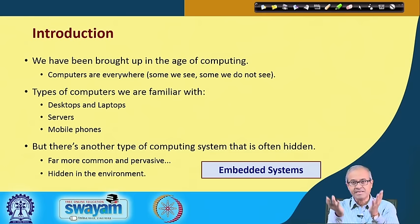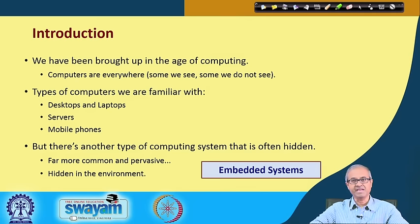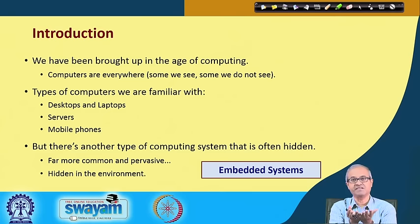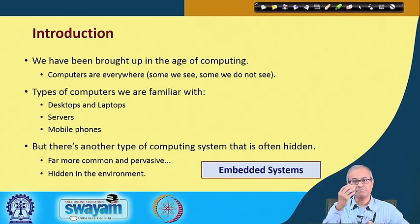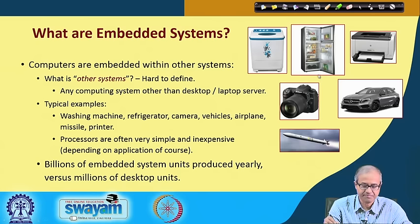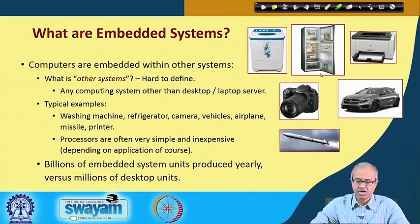By the term environment, we mean the surroundings or the scenario for which the system was designed. Take the example of an air conditioning machine. The computing system sitting inside an AC machine — for that computing system, the AC machine is the environment. It does not interact with anybody outside that AC machine. It is responsible for controlling the AC machine and responding to whatever commands you give through your remote control.